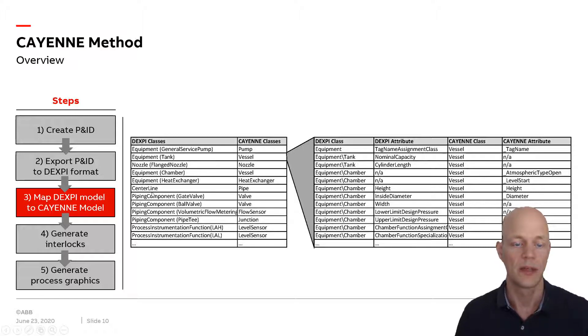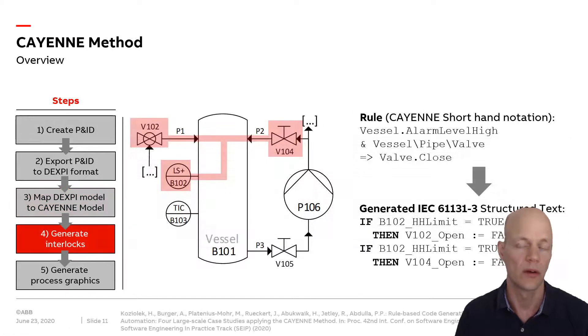Here's a very simple example of the model-to-model transformation that we perform. The DEXPI equipment class for a tank maps to our CAYENNE class called Vessel. We map the equipment tank to a vessel and also map the different attributes like the name, height, and diameter. But we omit many other properties that are not relevant for our use cases.